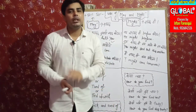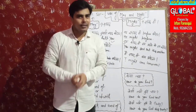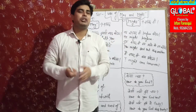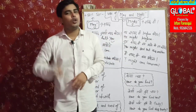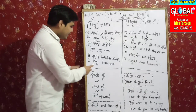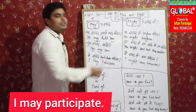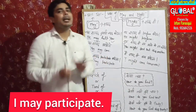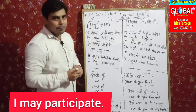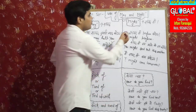Next: 'May shayad participate karunga' — There is a competition and someone asked me my status. I said I'm not sure — I have to go to Delhi. So 'main shayad participate karunga' becomes 'I may participate.' Now let's move to 'might.'